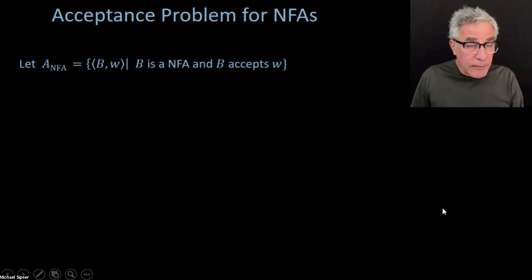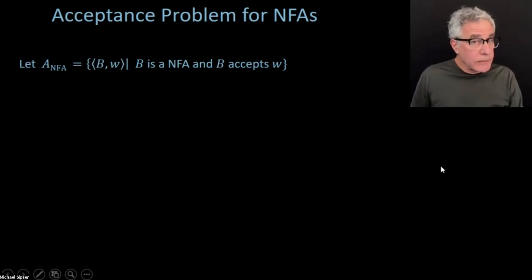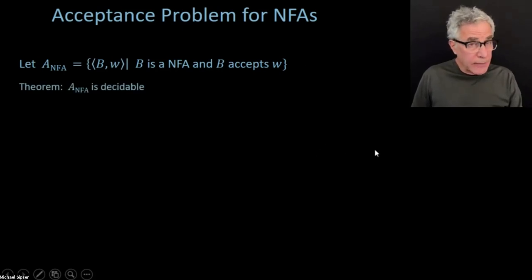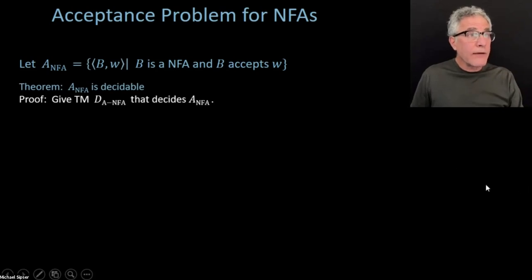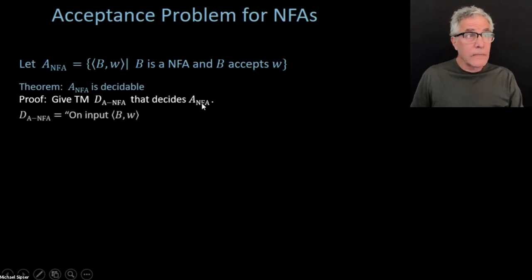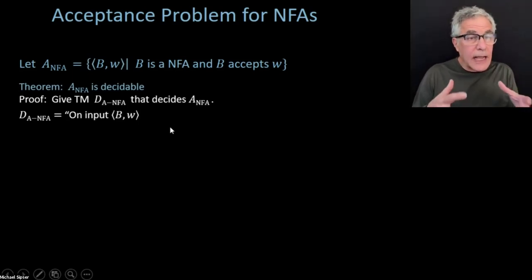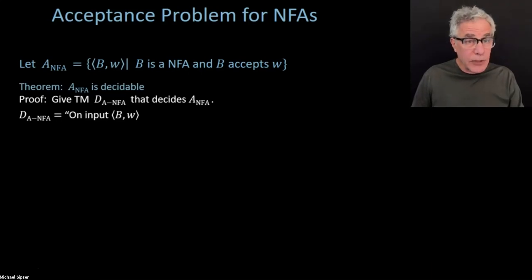Let's talk about the similar problem — the acceptance problem for NFAs, ANFA. Now, NFAs can loop via epsilon moves, so we have to be careful. That's also a decidable language. The decider DANFA takes input B and W, where B is an NFA and W is its input. Rather than simulating the NFA directly, I'll illustrate a different method: we have already shown a way of converting NFAs to DFAs.